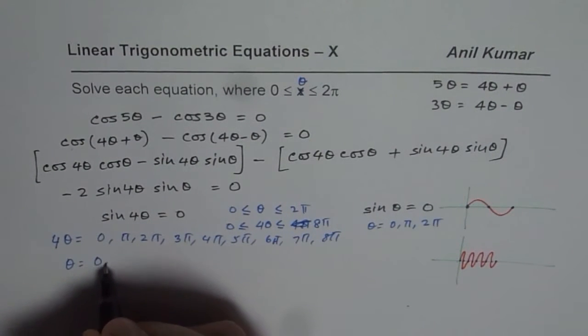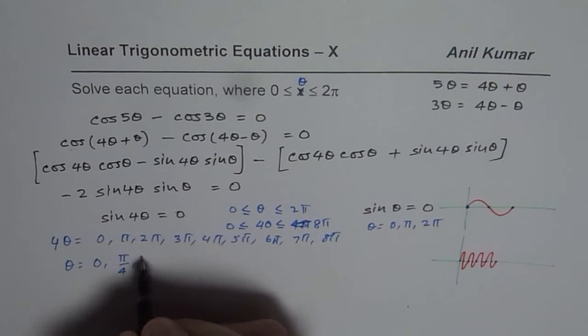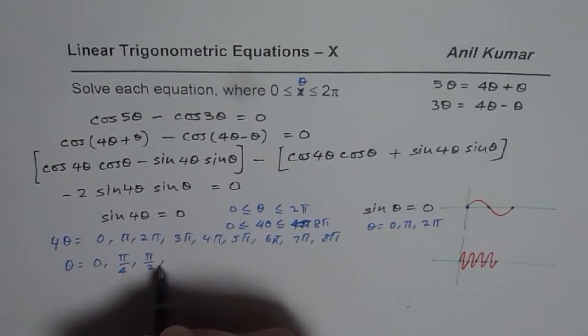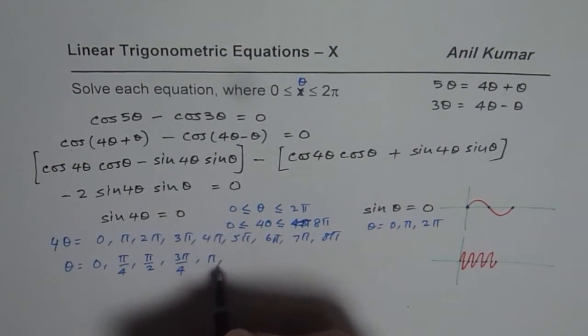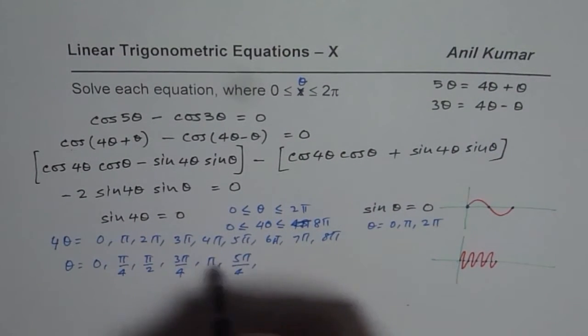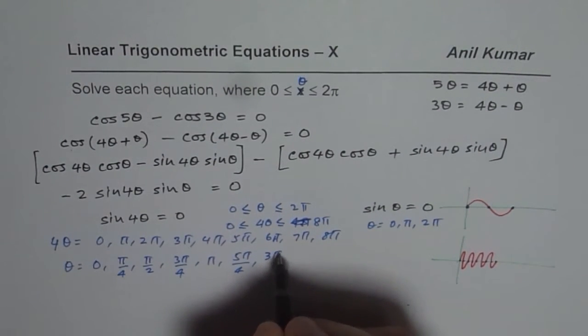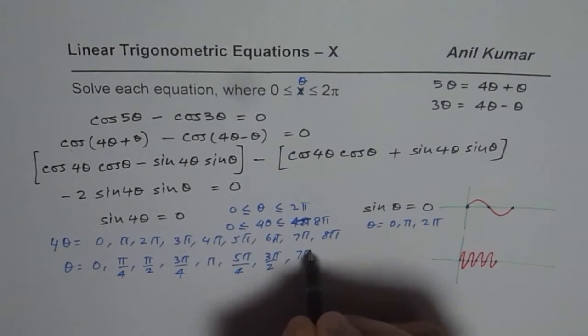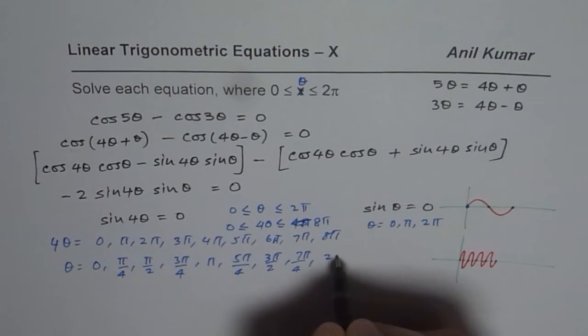When you divide by 4, you get θ equals 0, π/4, π/2, 3π/4, π, 5π/4, 3π/2, 7π/4, and 2π.